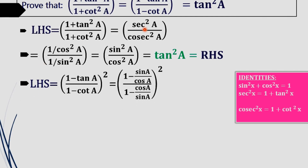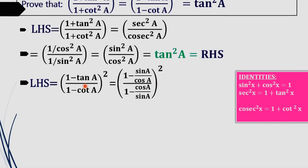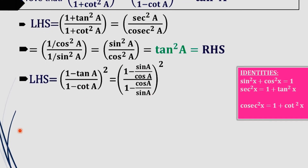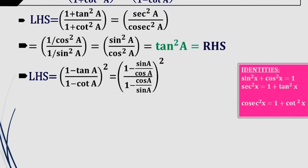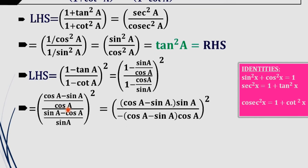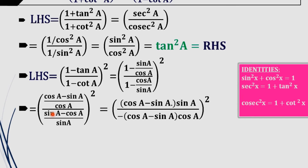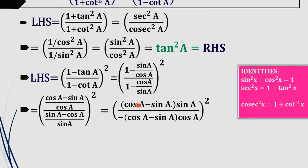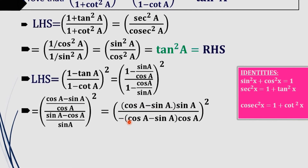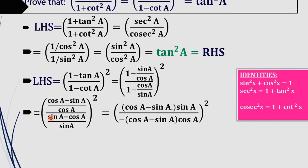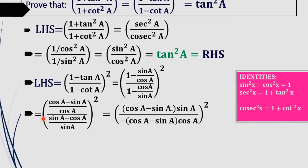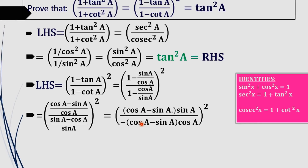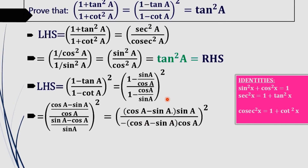Next, taking the second term — (1 - tan a) / (1 - cot a), whole squared — we substitute tan a = sin a / cos a and cot a = cos a / sin a. Taking LCM, the numerator becomes (cos a - sin a) / cos a and the denominator becomes (sin a - cos a) / sin a. So we have [(cos a - sin a) / cos a] divided by [(sin a - cos a) / sin a].